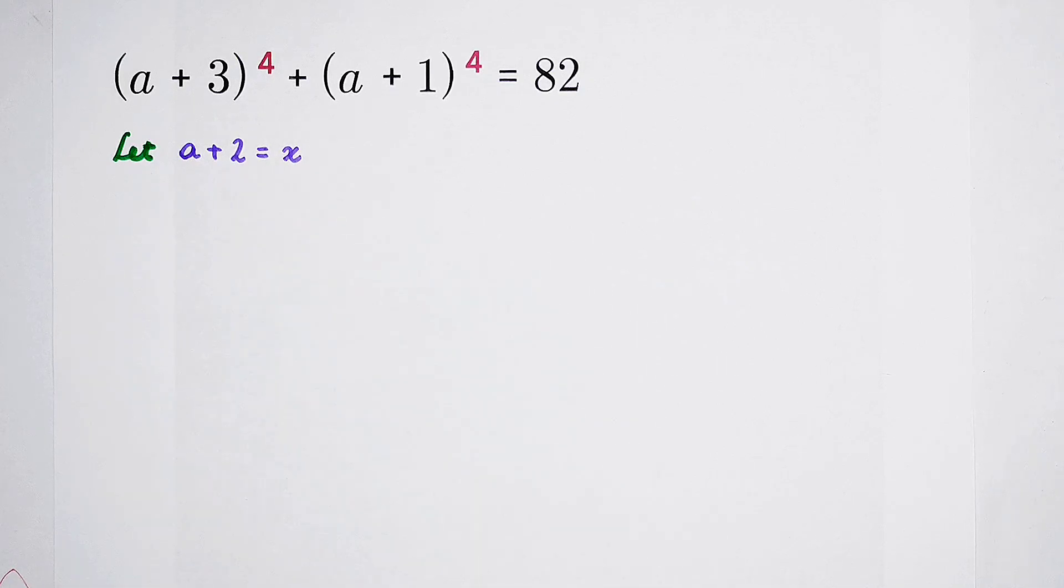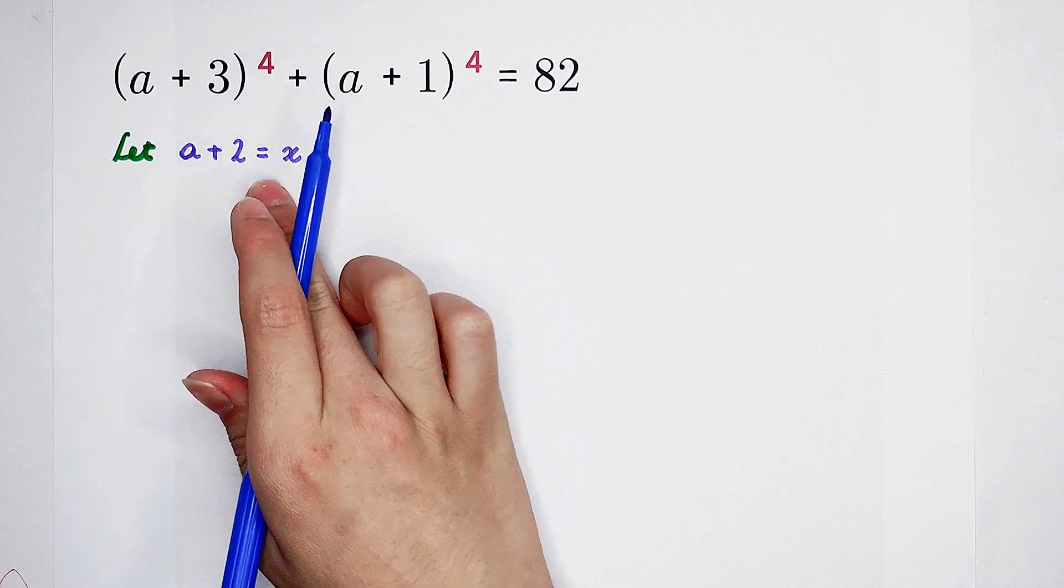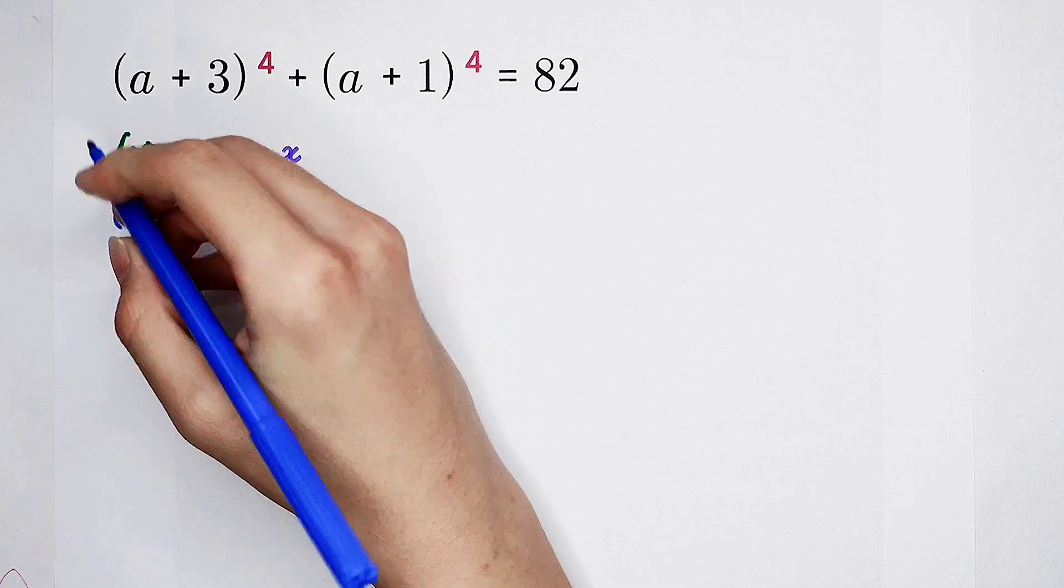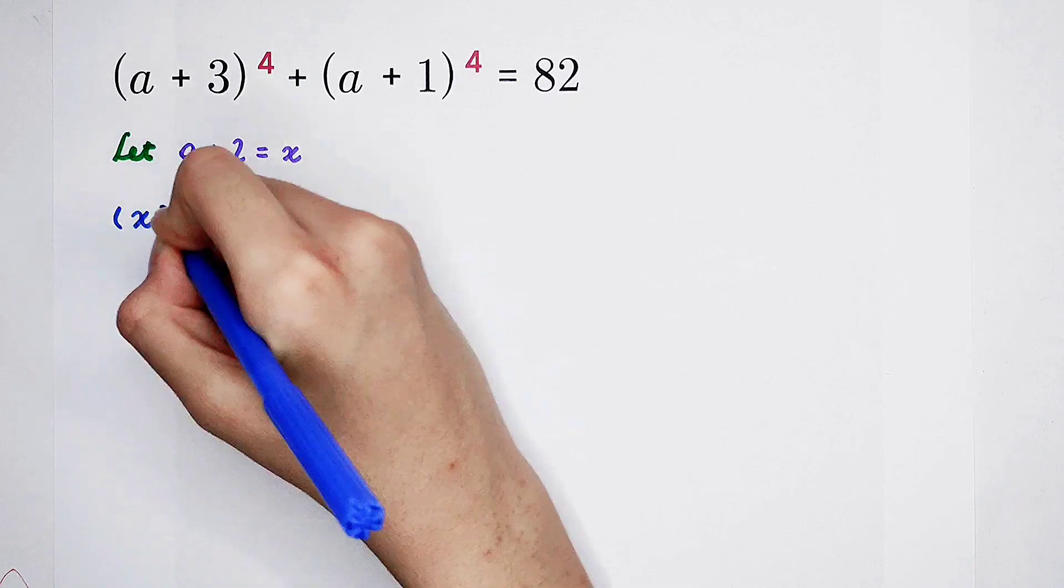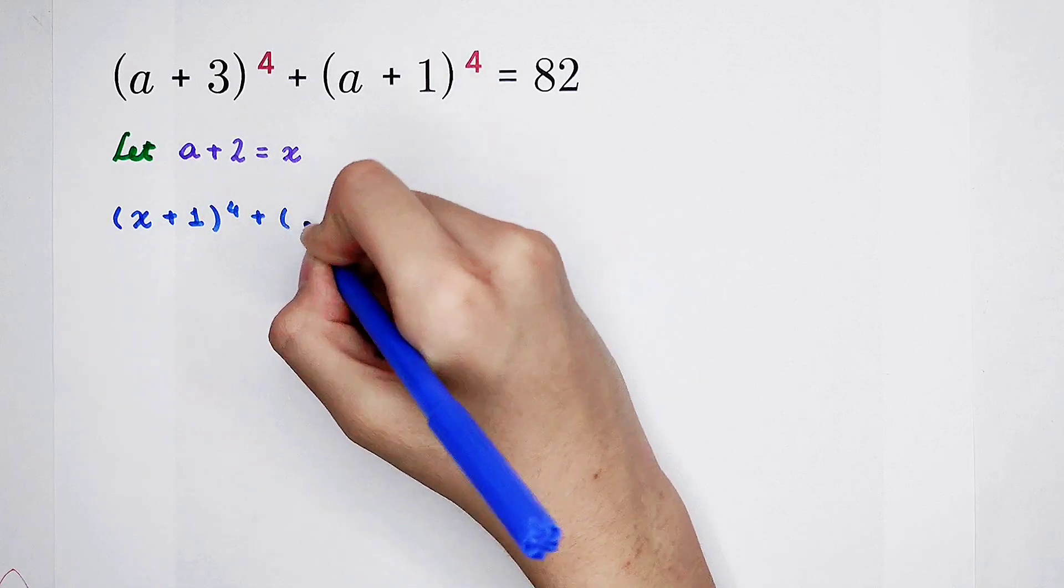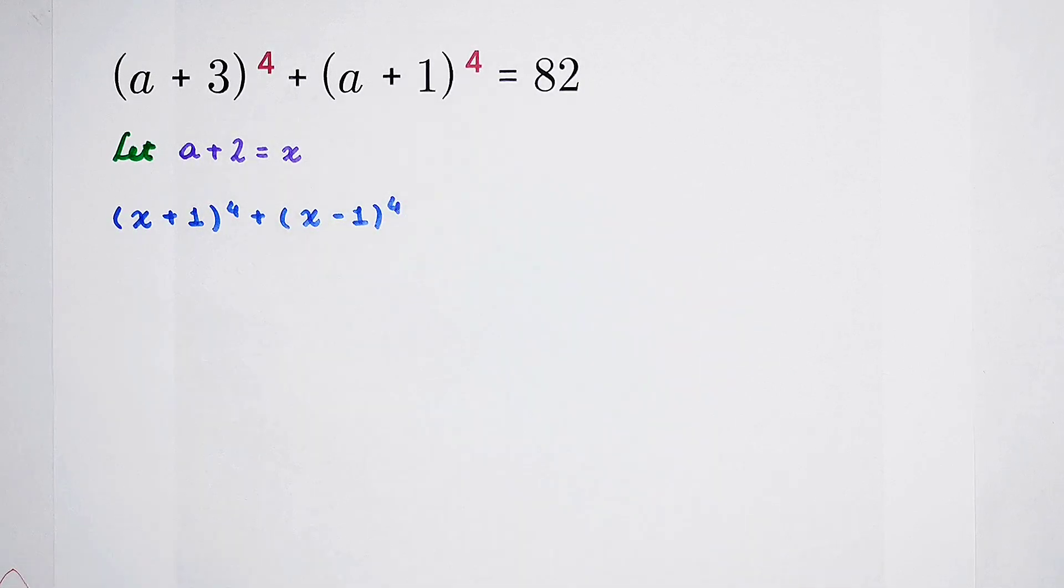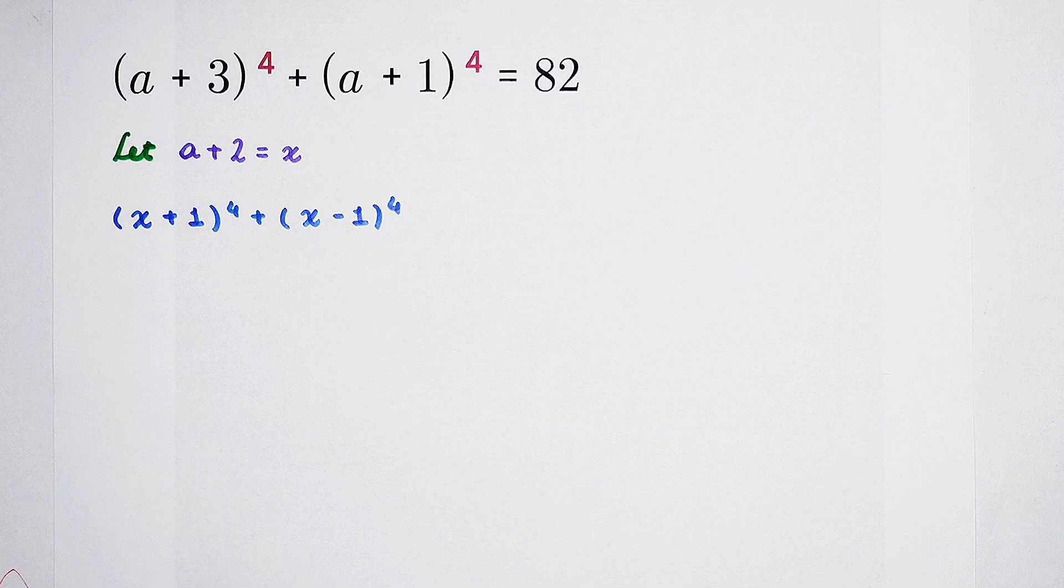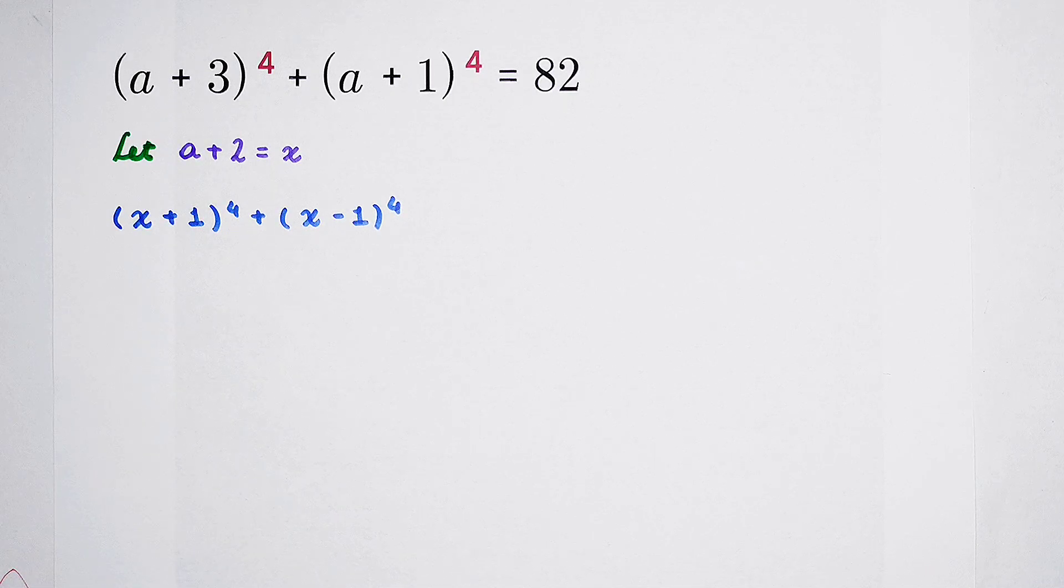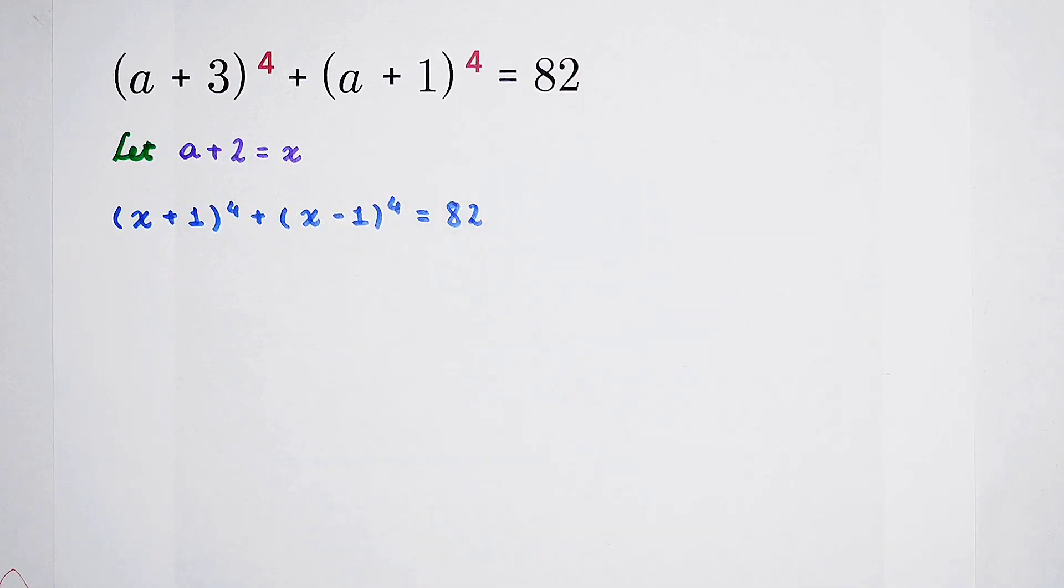When we substitute A plus 2 as x, then A plus 3 would be x plus 1 all to the power 4, and A plus 1 would be x minus 1 all to the power 4. You can see that plus 1, minus 1. After expanding, many terms can be cancelled. So this is the strong point.